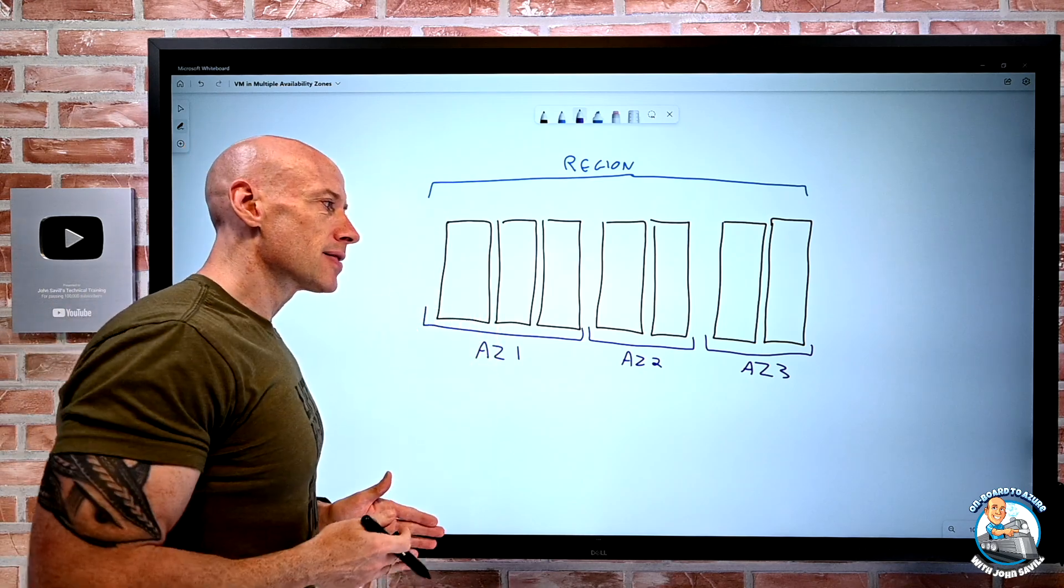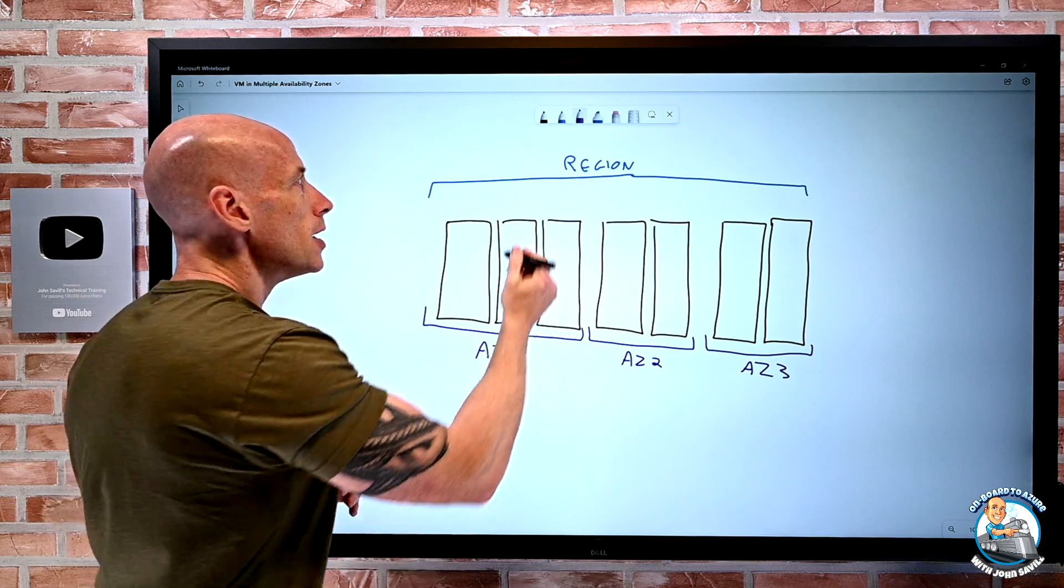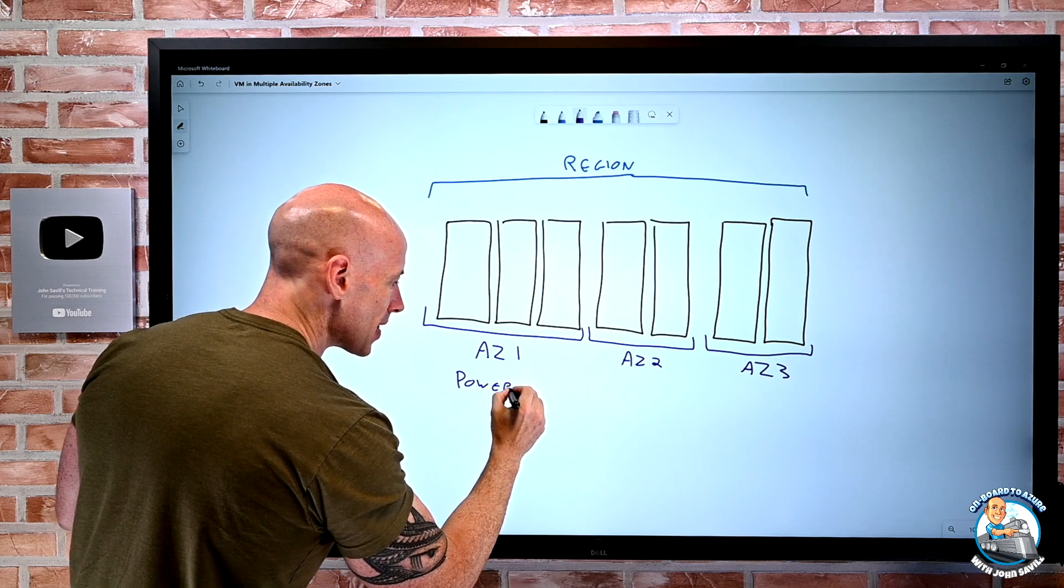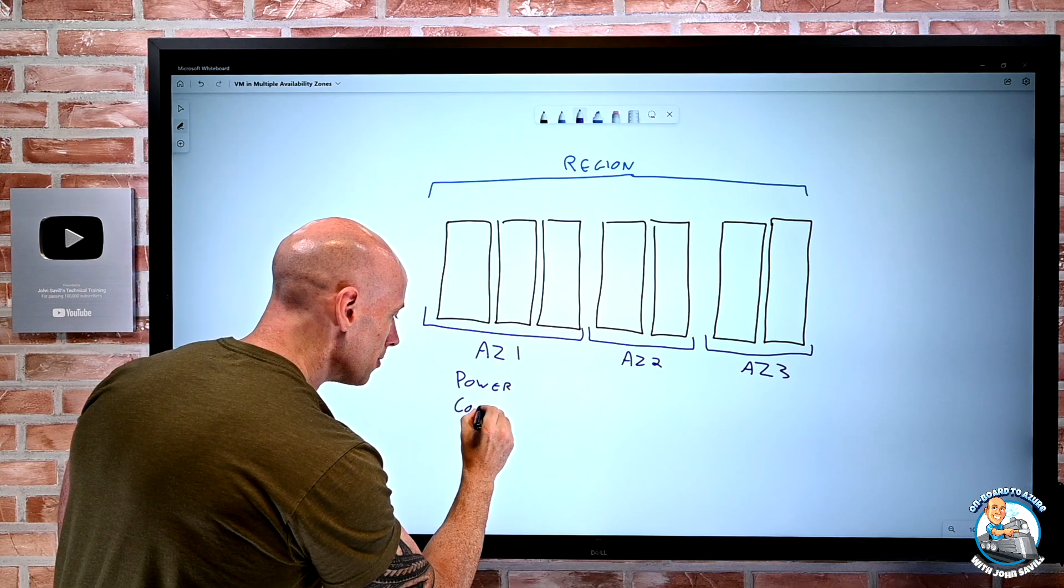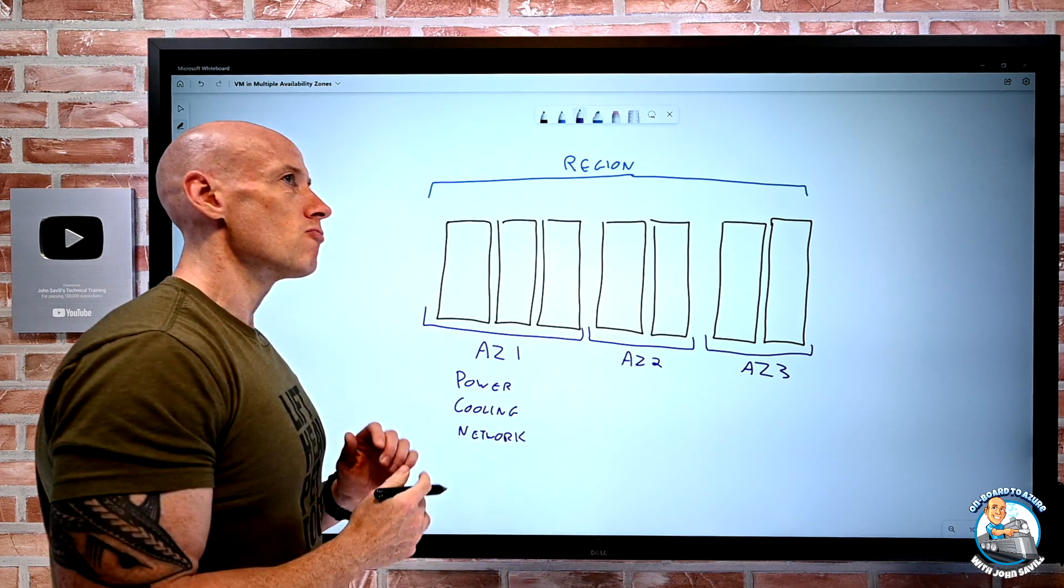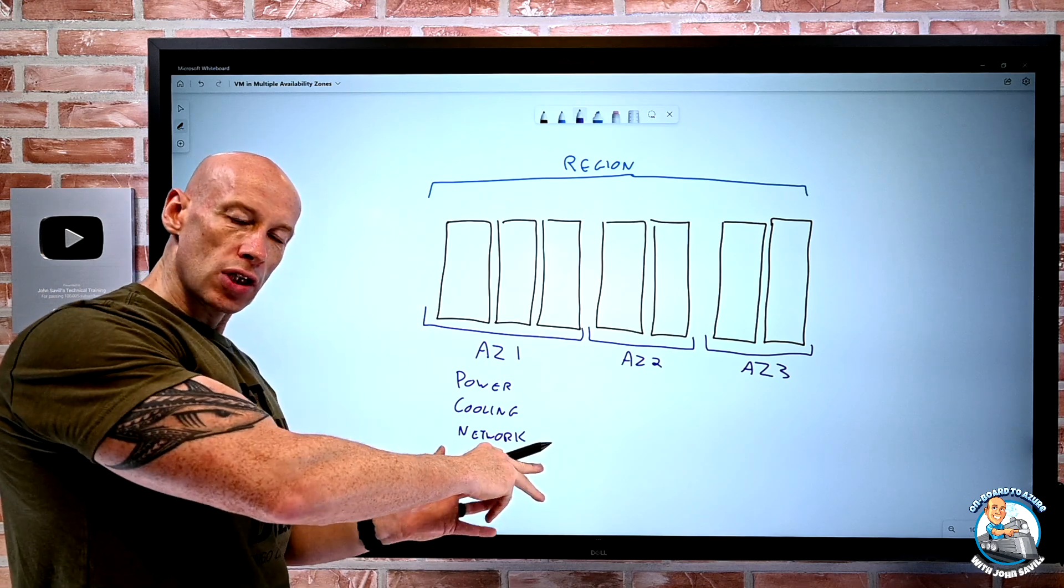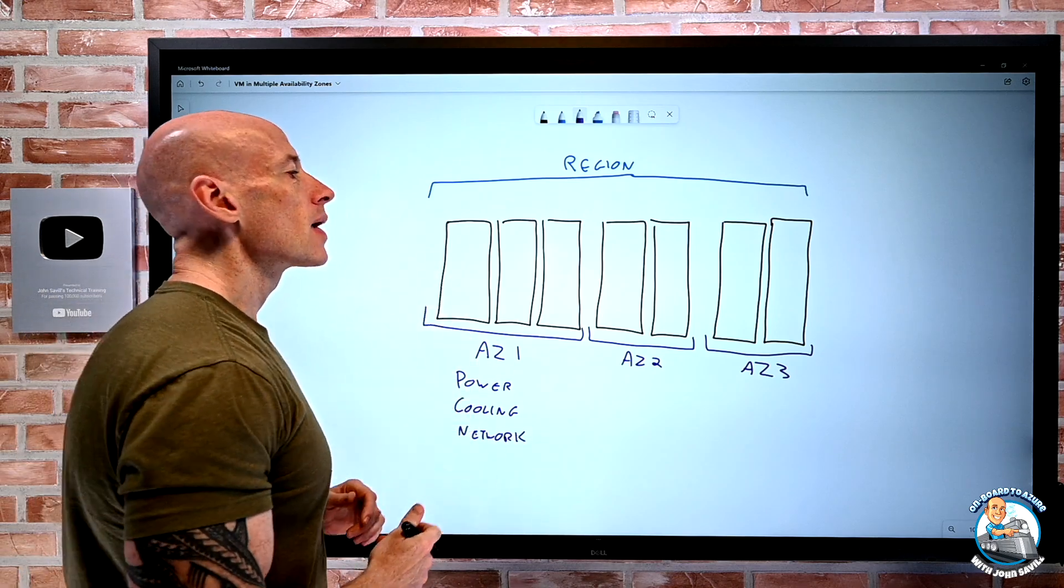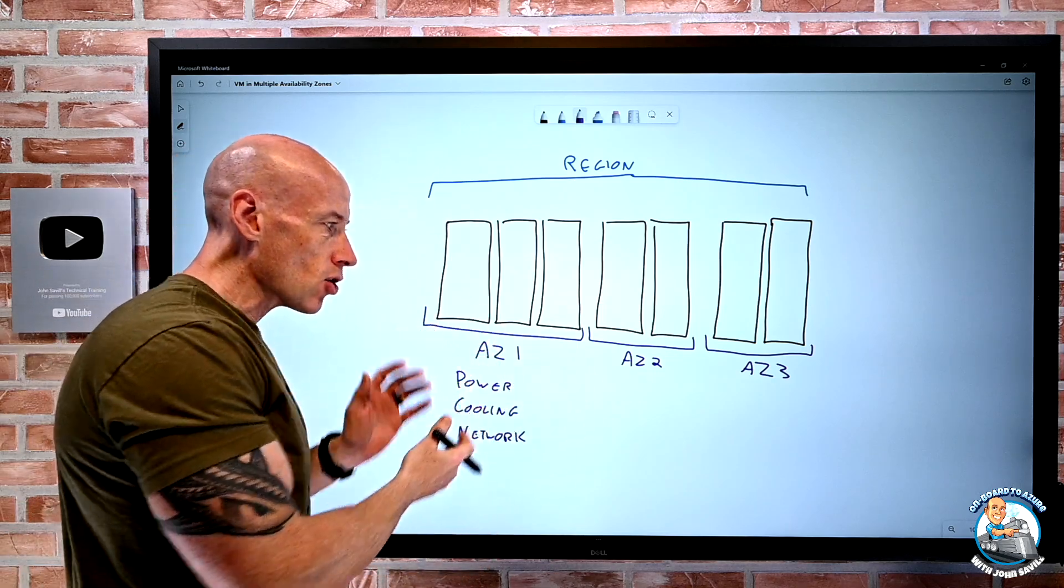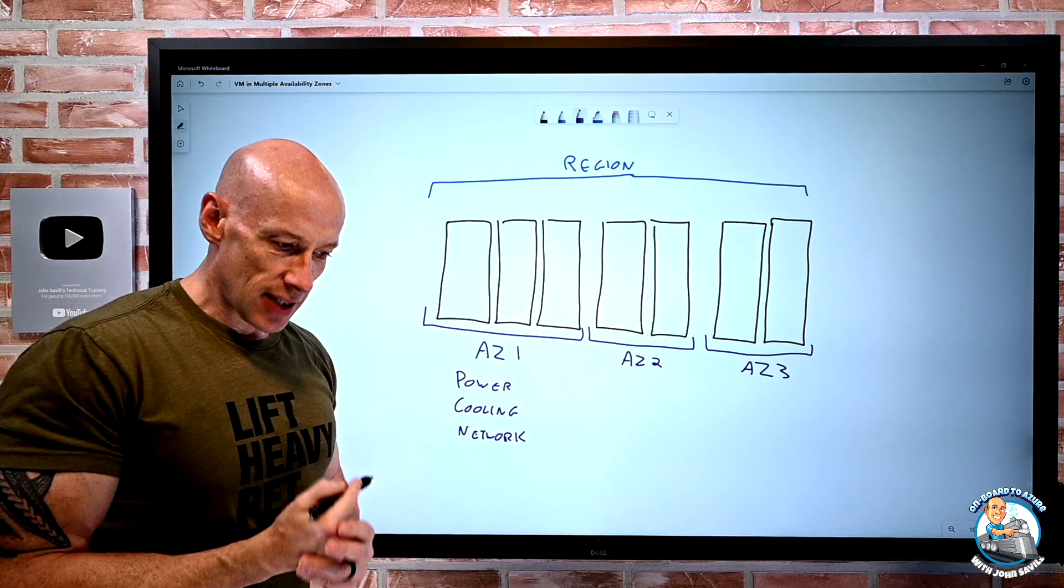Now, one of the key points and the idea of this is each set of these data centers that make up availability zones, well, they have independent power, maybe they go into different substations, cooling, and networking. So it's not just about resiliency at the physical building for maybe a fire or flood, but if there was some power outage or water problem and networking, each of these different sets have resilient, isolated services of those. So a power failure, for example, for this set wouldn't affect these other sets of data centers.